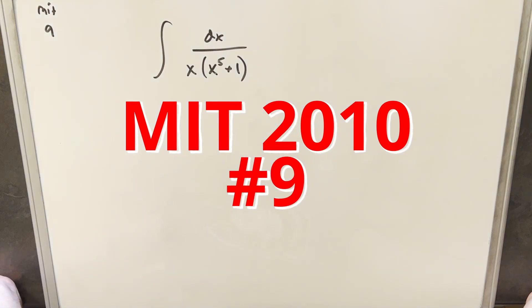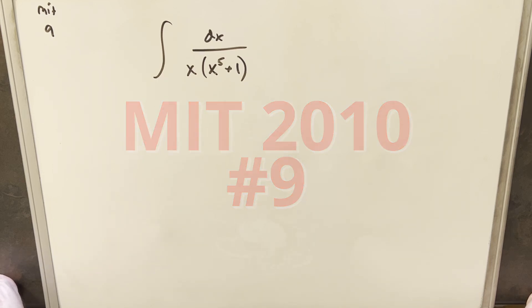Hey, we have here another integral from MIT Integration B. This is from 2010, problem number 9. We have the integral of dx over x times x to the 5th plus 1.